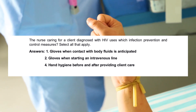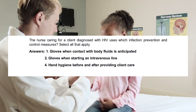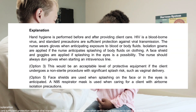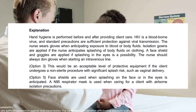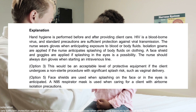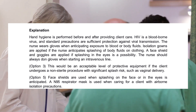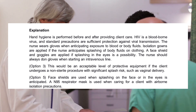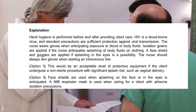Answers 1, 2, and 4. Hand hygiene is performed before and after providing client care. HIV is a bloodborne virus, and standard precautions are sufficient protection against viral transmission. The nurse wears gloves when anticipating exposure to blood or body fluids. Isolation gowns are applied if the nurse anticipates splashing of body fluids on clothing. A face shield and goggles are applied if splashing in the eyes is a possibility. The nurse should always don gloves when starting an intravenous line.